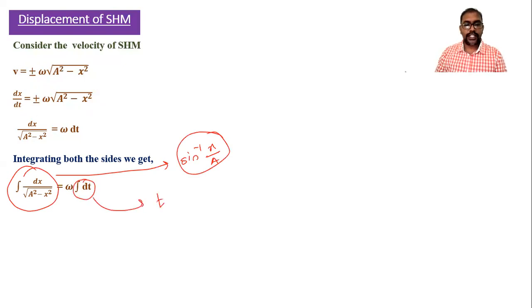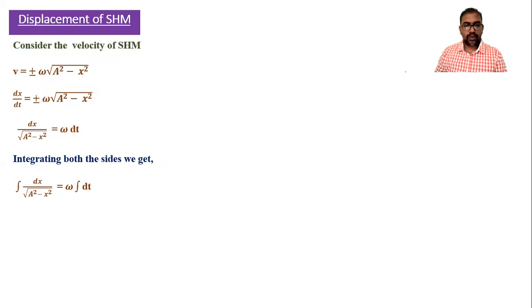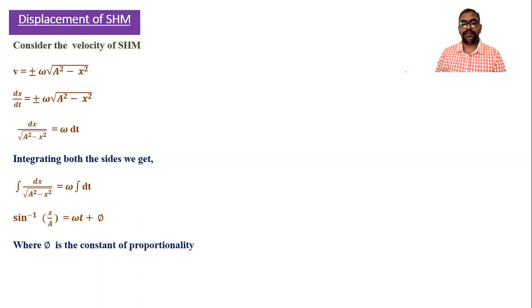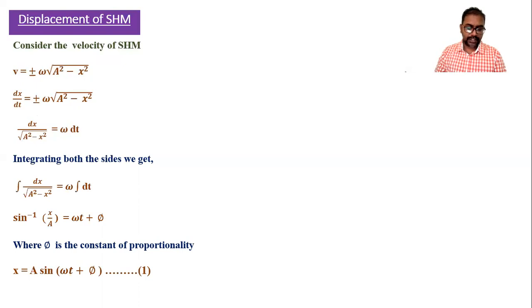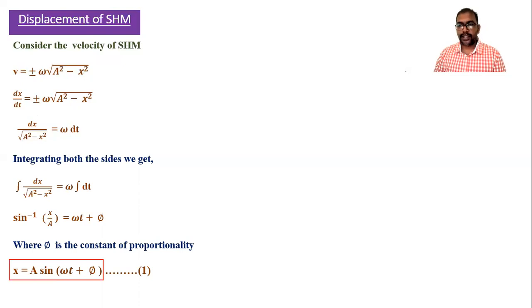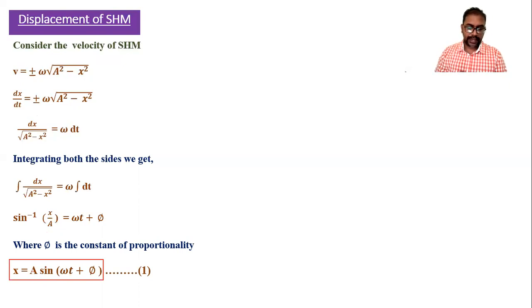This is a standard integration. The left side integrates to sin⁻¹(x/a) and the right side to ωt. So we get sin⁻¹(x/a) = ωt + φ, where φ is the constant of integration. Transferring sin⁻¹ to the right side, we get x = a sin(ωt + φ). This is the general expression for displacement in linear SHM.